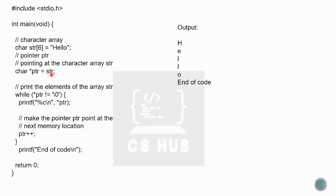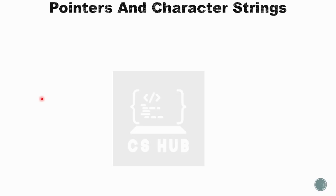Initially ptr is equal to str, so ptr is pointing to the first character of 'hello', which is H. We print each character in turn, incrementing ptr each time. The while condition checks while(*ptr != '\0'), printing each character until the null terminator is reached.